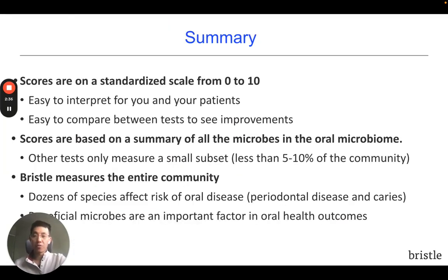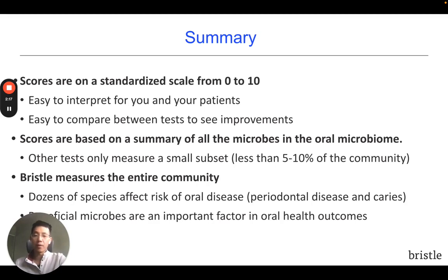In summary, the scores for a Bristle test are on a standardized scale from 0 to 10, and these scores are unique to Bristle only. The scores are based on a summary of all the microbes in the oral microbiome, while other tests can only measure a very small subset. The Bristle test measures the entire community, which includes the dozens of species that affect your risk of oral disease, including both periodontal disease and cavities. And importantly, the beneficial microbes are included in a Bristle test, which are an important factor in oral health outcomes.